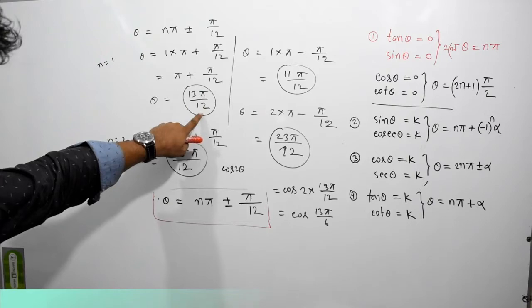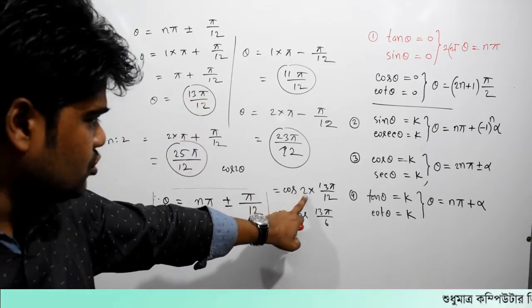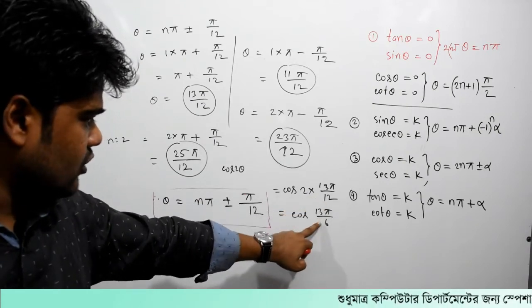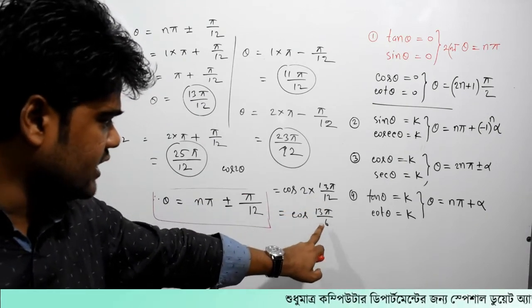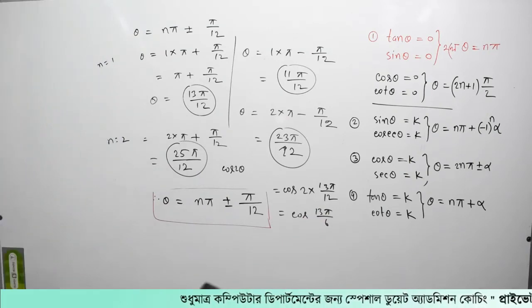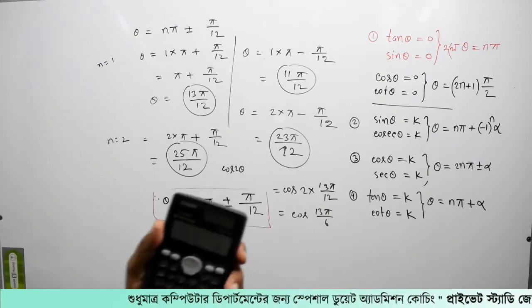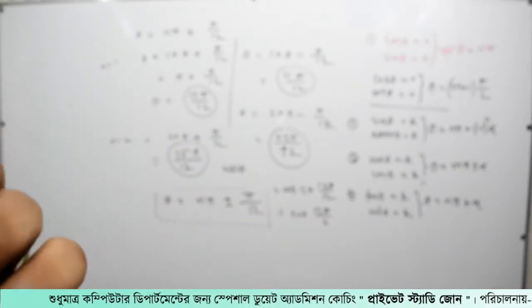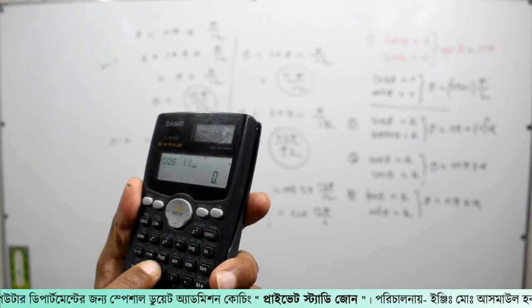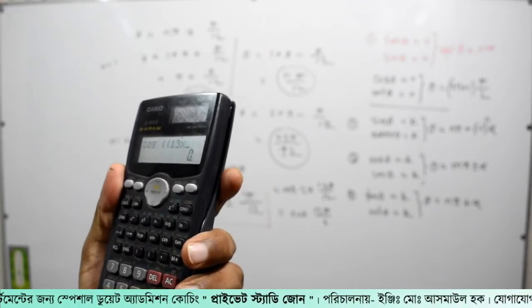3 pi by 2. Cos 2 theta is the answer. Cos theta, what is it going to say? Cos theta is equal to root 3 by 2.